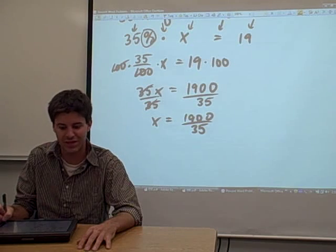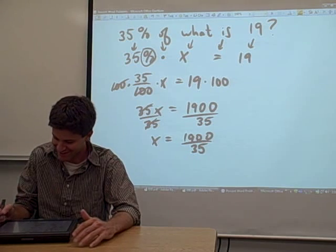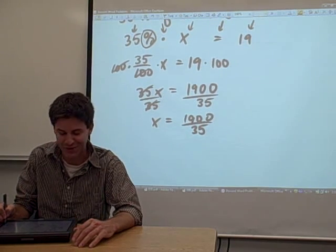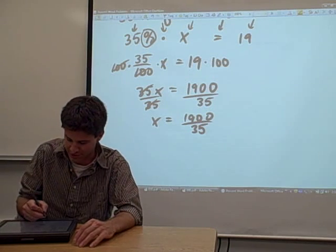Now if you're like me, you're not really satisfied with that answer. I need closure on this problem. I need to know what the number is. So if we actually want to figure out what 1900 over 35 is, we need to do long division.